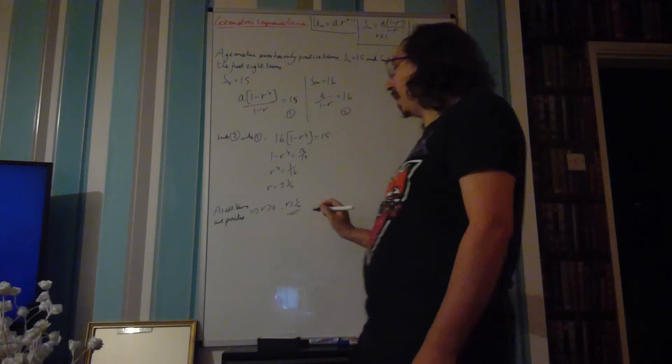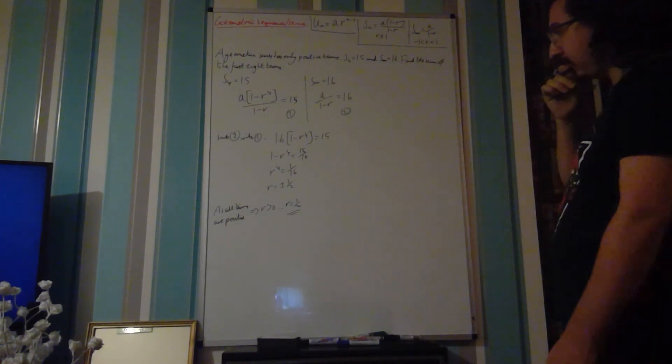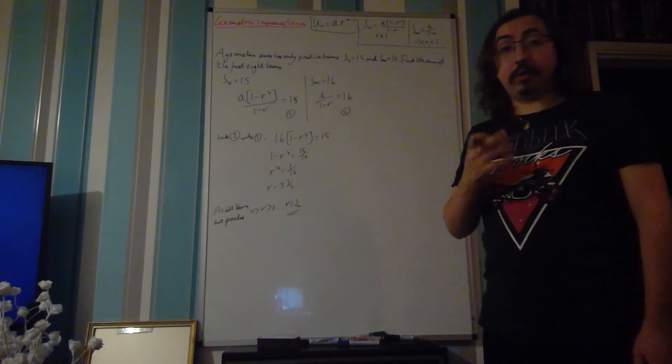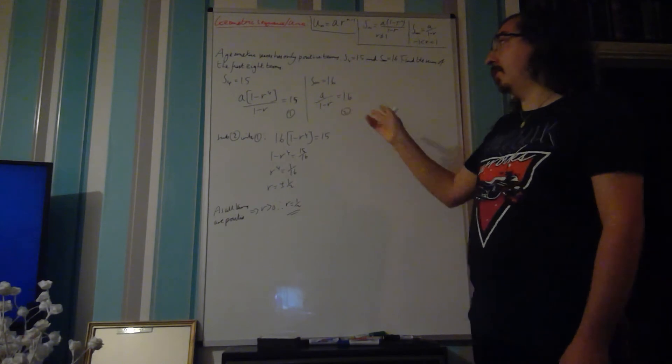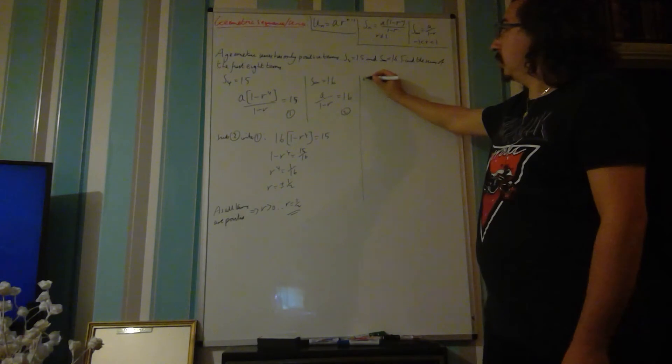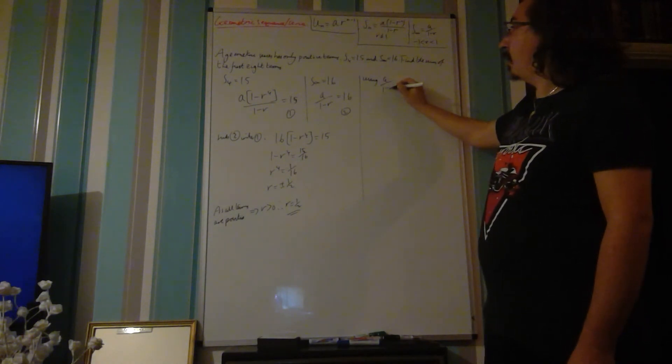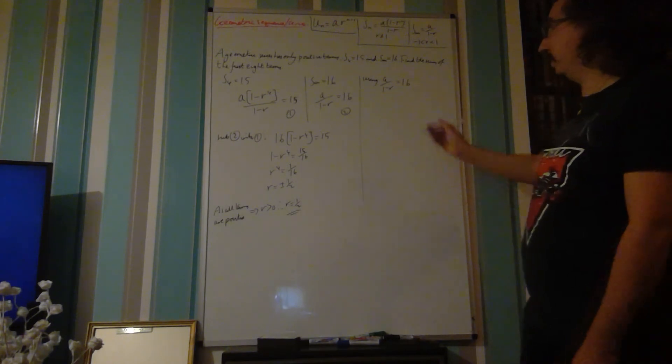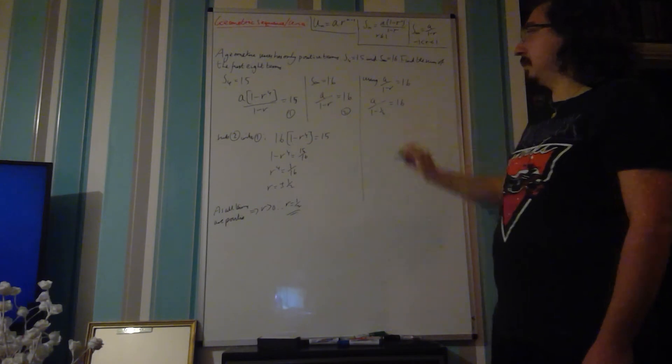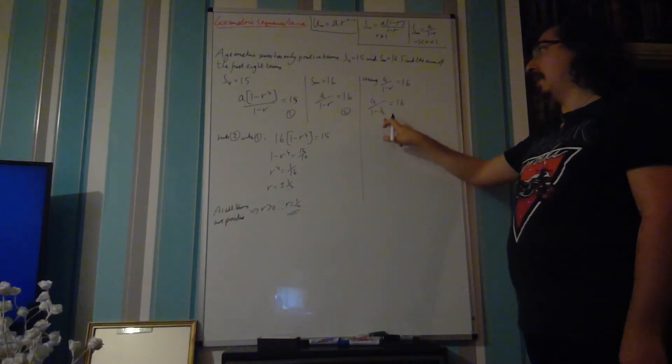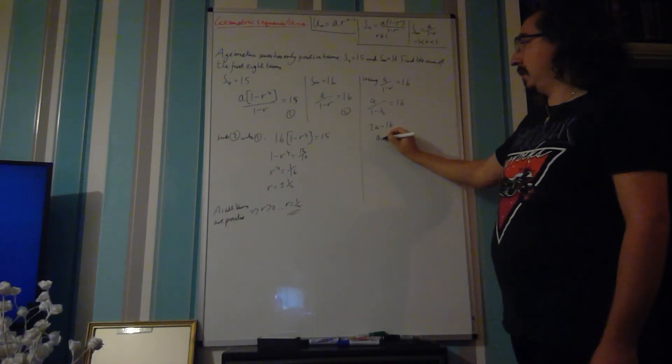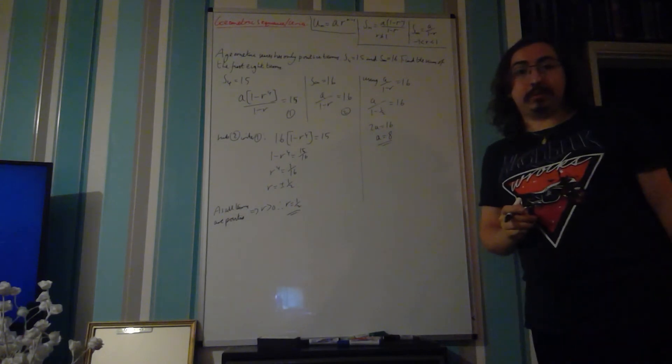Therefore r equals a half. We have a value for r, but we do need to find what the first term is. Using a over 1 minus r equals 16, we can say that a over 1 minus a half equals 16. 1 minus a half is a half, so 2a equals 16 and therefore a equals 8.